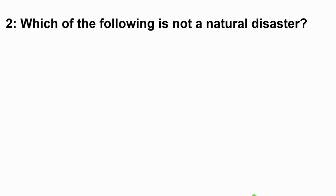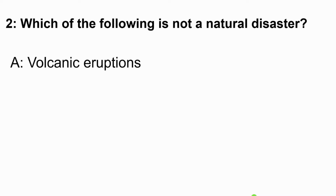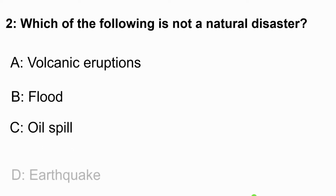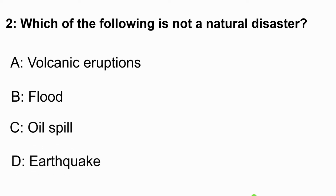Question 2: Which of the following is not a natural disaster? Option A says volcanic eruptions. Option B says flood. Option C says oil spill. And option D says earthquake. The correct answer is C, oil spill.